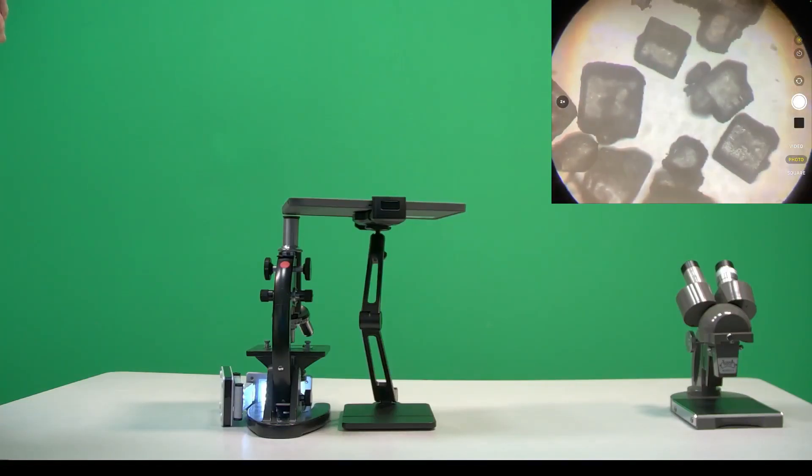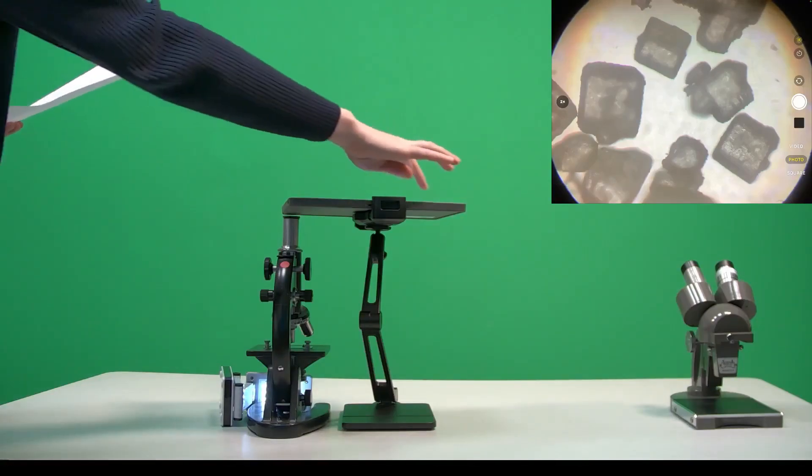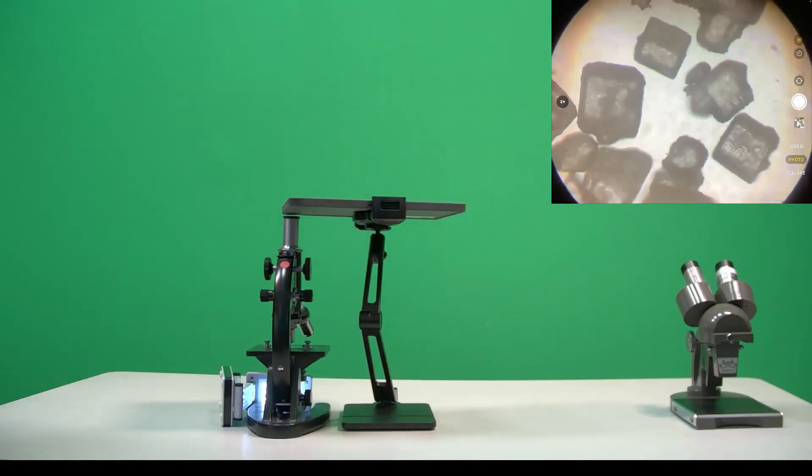The students may need some assistance getting things lined up again in the event of a bump of the iPad or the microscope, either from a teacher or a lab partner. The student can also take some pictures for later viewing. This could be useful for the whole class, as well as for the student with low vision.